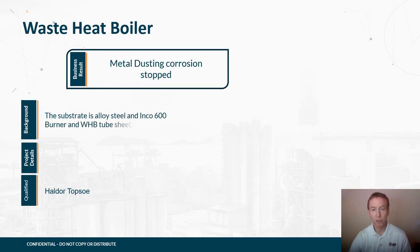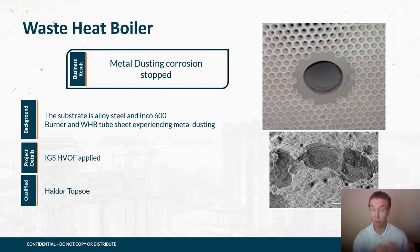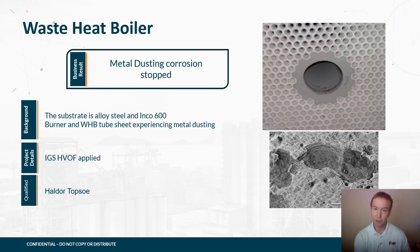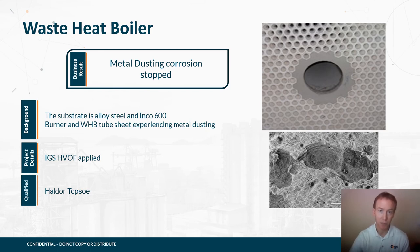For metal dusting applications, IGS uses an HVOF process. For amine systems we typically apply a C276-based alloy, whereas for metal dusting we apply a 50/50 nickel-chrome alloy using HVOF to mitigate that corrosion. In this case it was a waste heat boiler tube sheet — particularly at the entrance points to those tubes where you get high velocities — that was experiencing severe metal dusting. IGS has been doing this type of application since the mid-1990s for facilities such as GTL plants, and we have wide and extensive experience installing this solution.